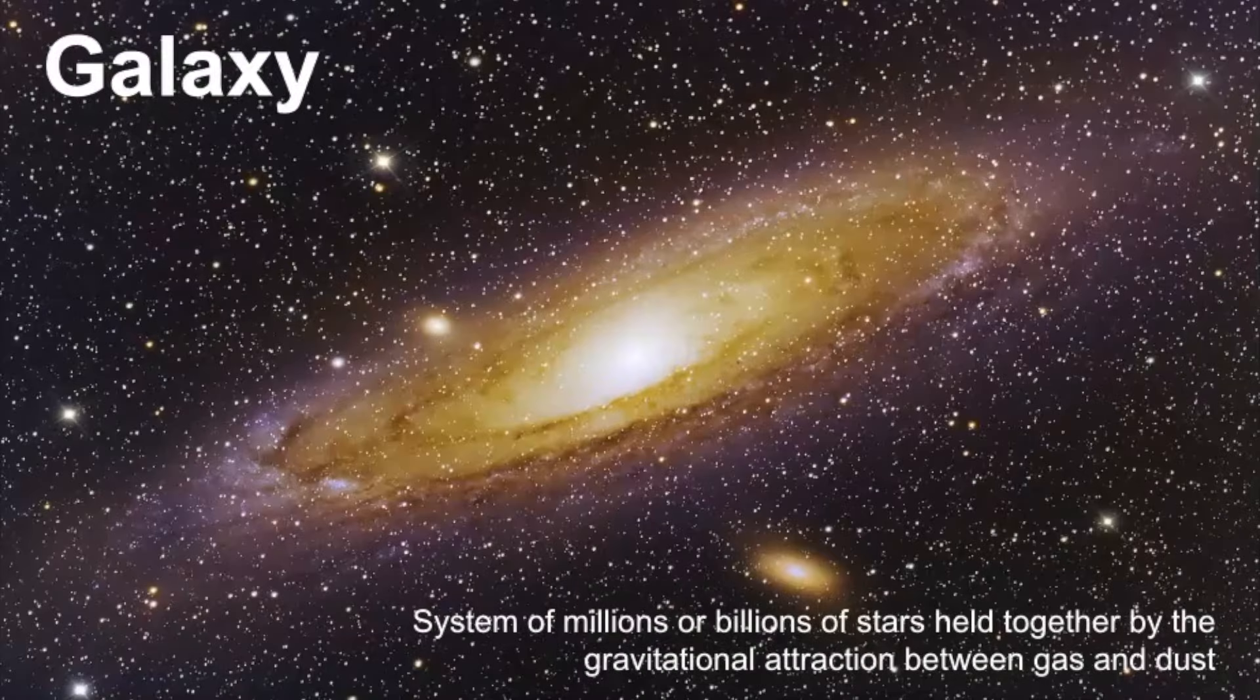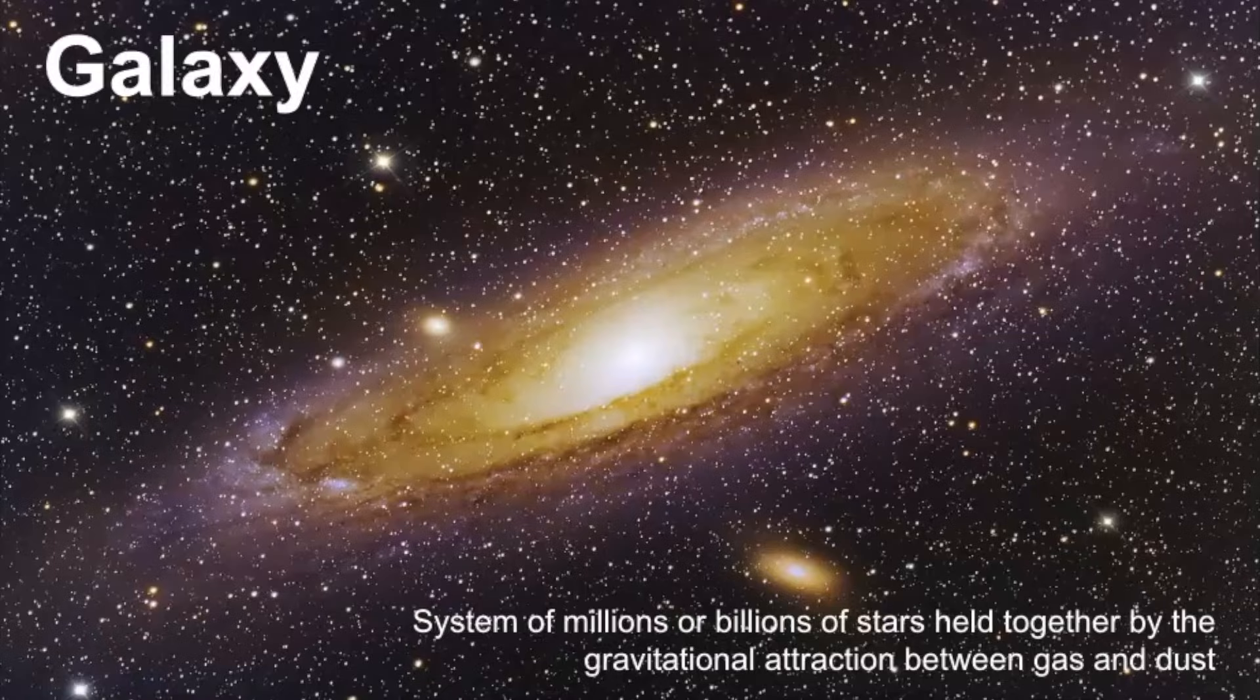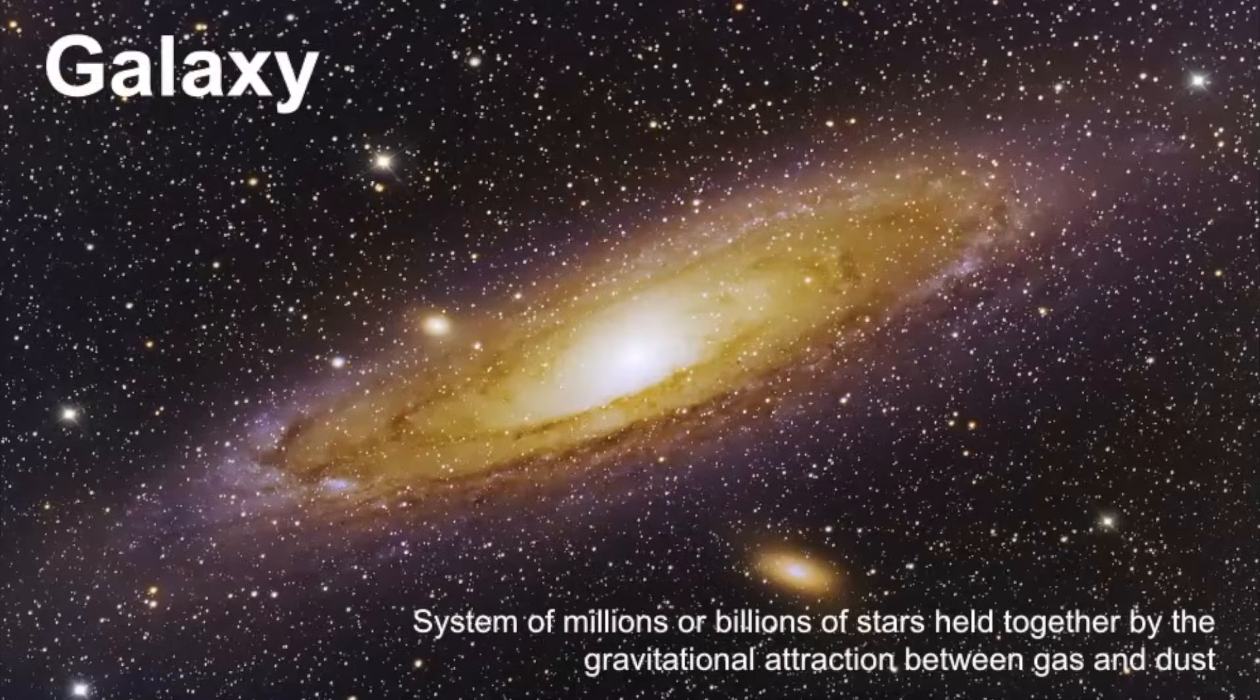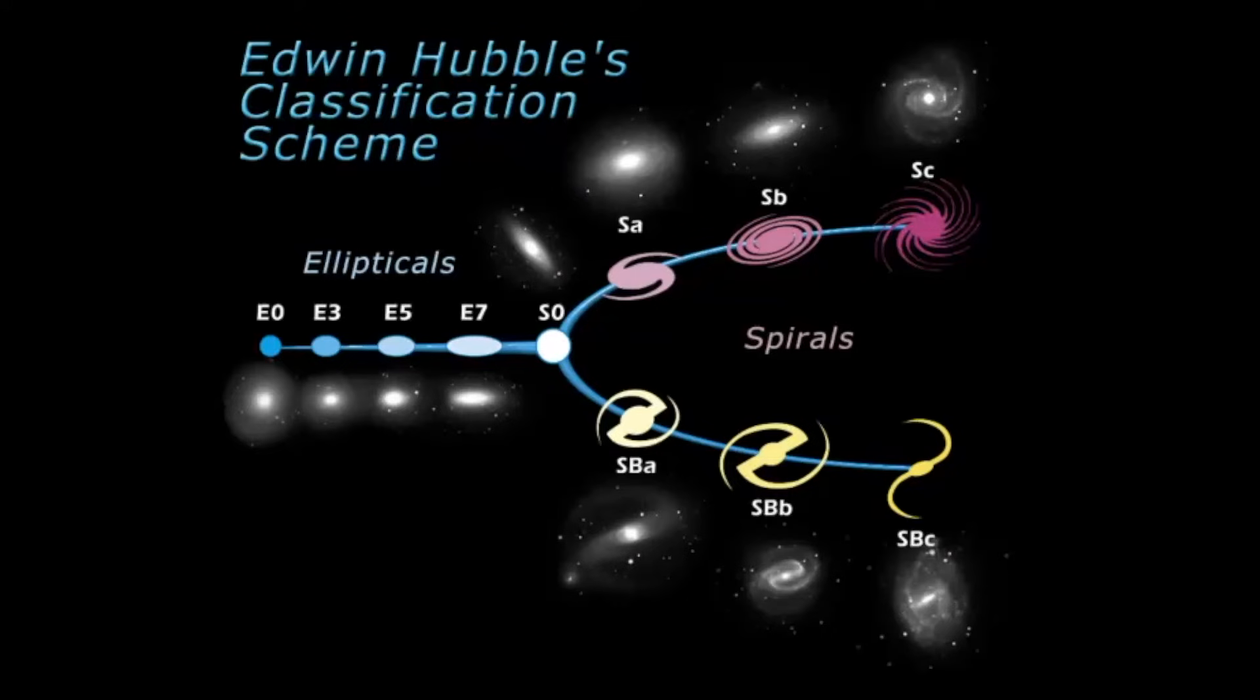Let's begin with the broad definition of what a galaxy is. A galaxy is a system of millions or billions of stars held together by the gravitational attraction between the gas and dust within the galaxy. They're classified by their shape. If you look here, these are the two main types of galaxies that we see: spirals and elliptical galaxies.